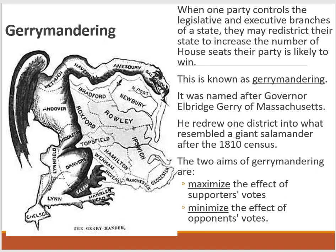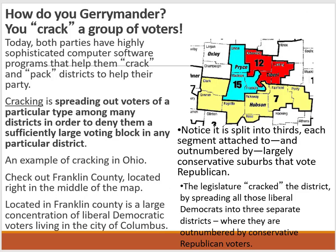The two aims of gerrymandering are: number one, maximize the effect of supporters' votes, and number two, minimize the effects of opponents' votes. There are a couple of ways to gerrymander. The first is to crack — you can crack a group of voters. Both parties now have highly sophisticated computer software and data analysis to crack and pack districts. Cracking means spreading out voters of a particular type among many districts to deny them a sufficiently large voting block in any particular district.